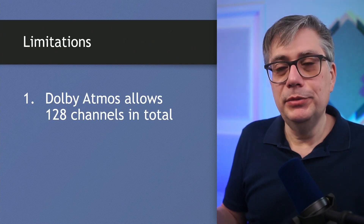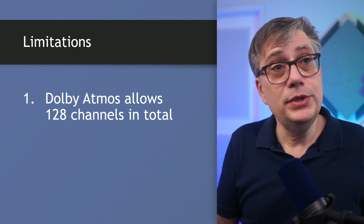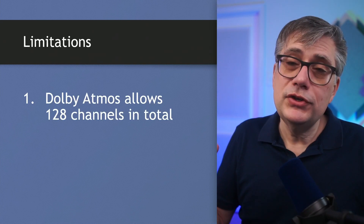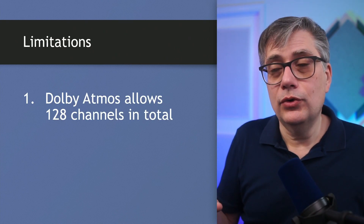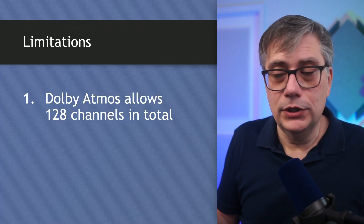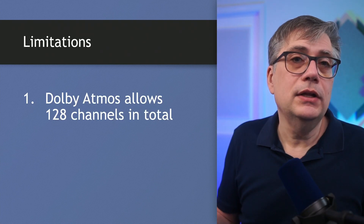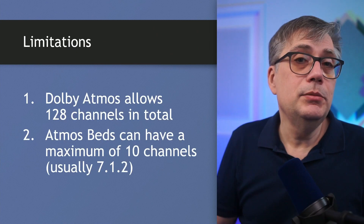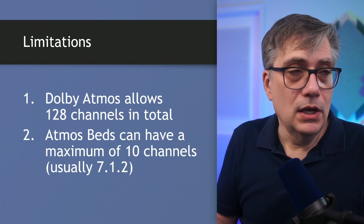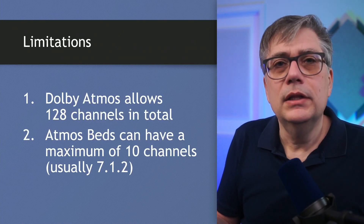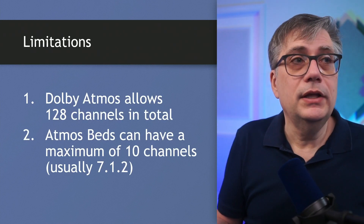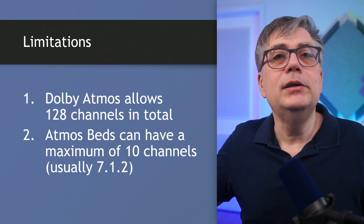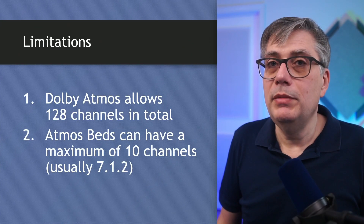This obviously comes with a couple of limitations. Because we keep track of each individual object, there is a certain limit on the number of objects we can use — above a certain limit, it becomes impractical and too expensive to compute in real-time. In the specifications, Dolby limits the total number of channels to 128, and limits the number of channels for each bed to 10. Because you must have at least one bed, the first 10 channels are the initial bed, leaving 118 channels for either objects or additional beds. So you cannot have an unlimited number of objects.